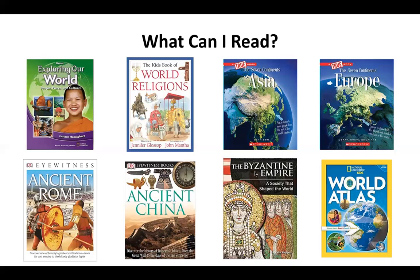Next, I have a book on the Byzantine Empire, which is the society that shaped the world. Reading this book is going to give you great practice in thinking about how different cultures and geographies can affect the development of our world. And last but not least, I have a world atlas. I highly recommend reading through this world atlas so that you can familiarize yourself with the different parts of our world, the geography, and the makeup of those different parts, so you can start making connections to how it affects culture.